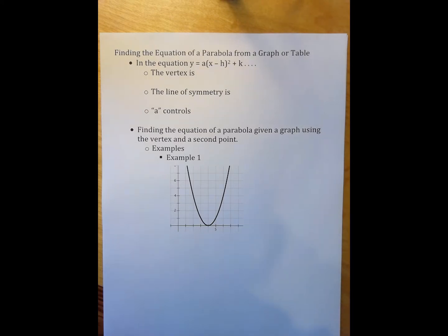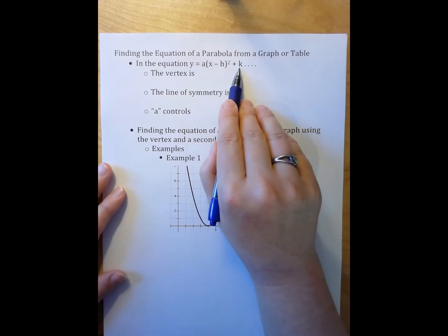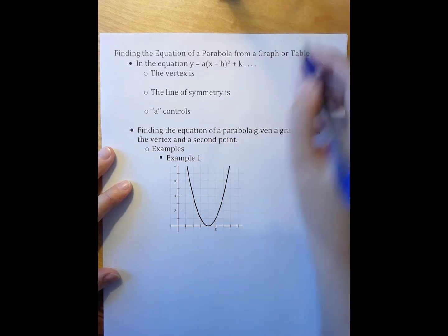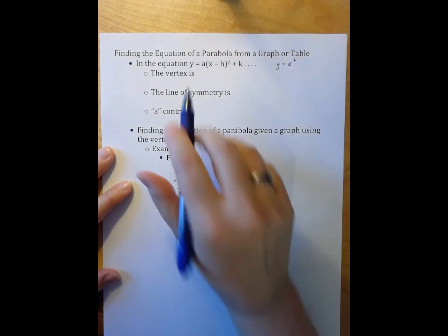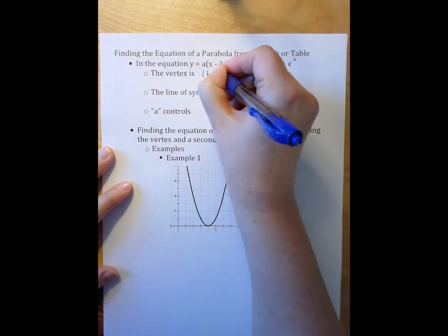So the first thing that we need to do is we need to remember what all the various constants that are represented by the letters a, h, and k mean in terms of the mother function, the parent function of y equals x squared. So the vertex is represented here by h, k.